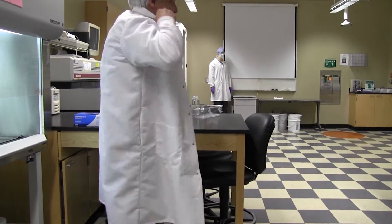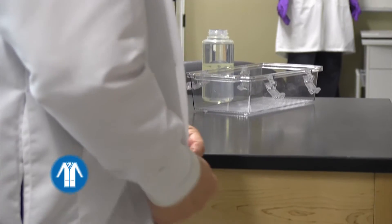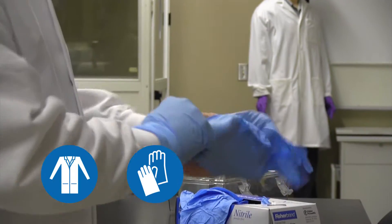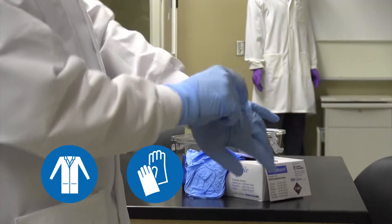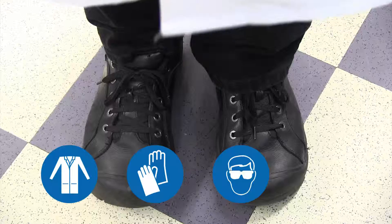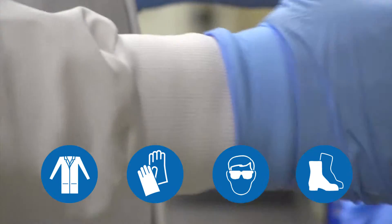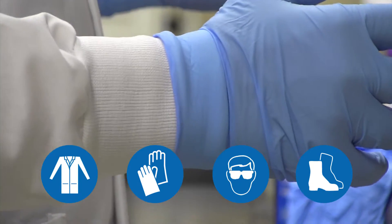The minimum PPE for working in an ISU laboratory is lab coat, gloves, eye protection, and closed-toe shoes. Be sure to cover any exposed skin on your lower arms by pulling your gloves over the sleeves of the lab coat.